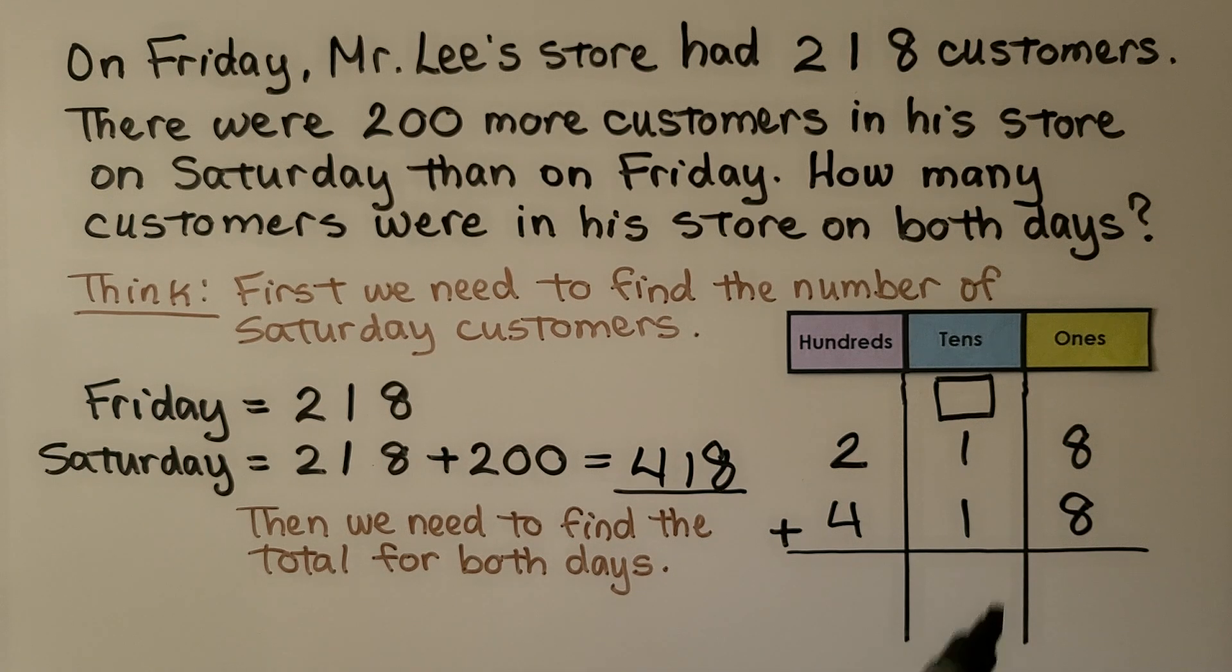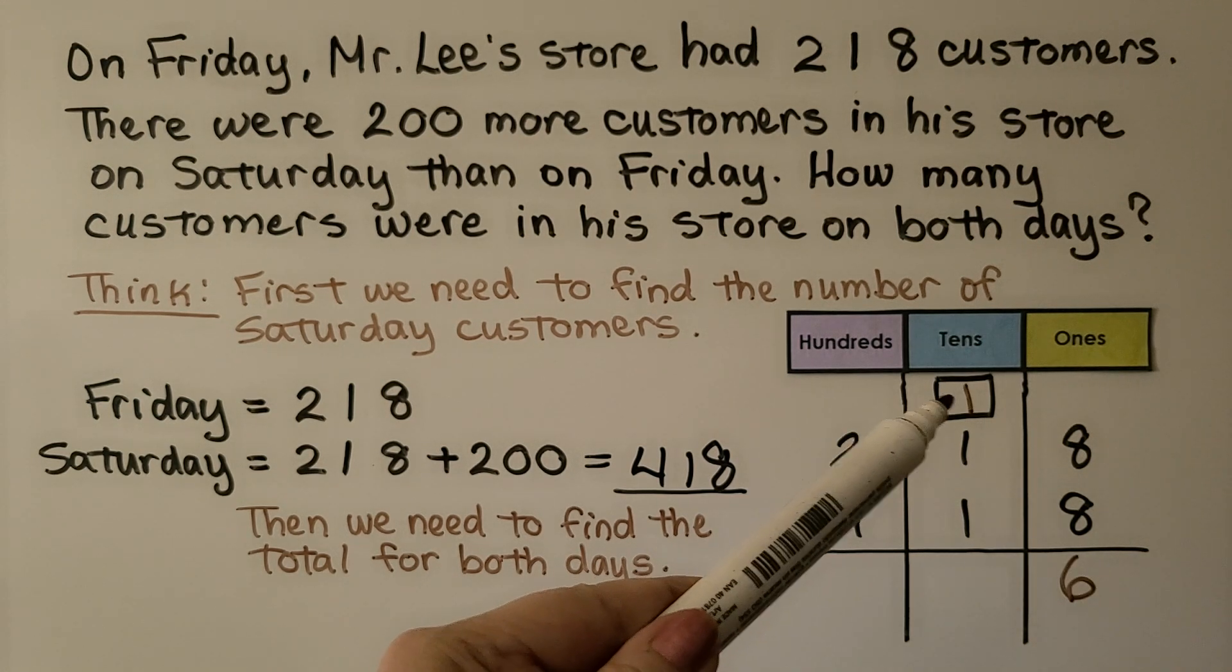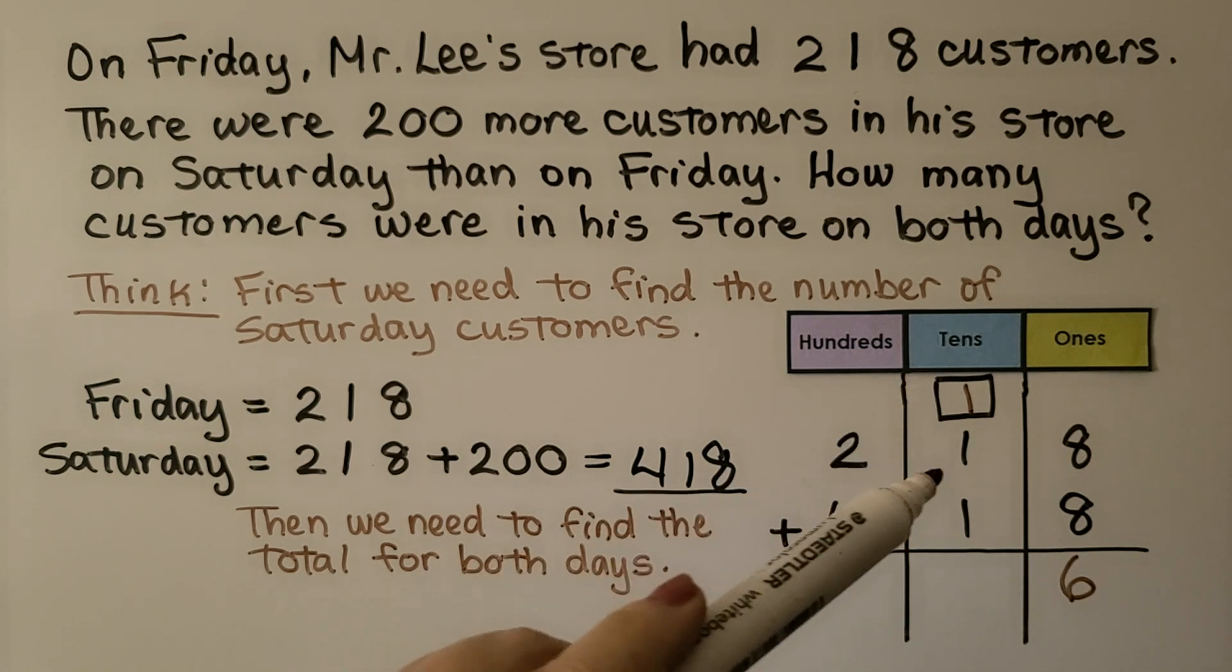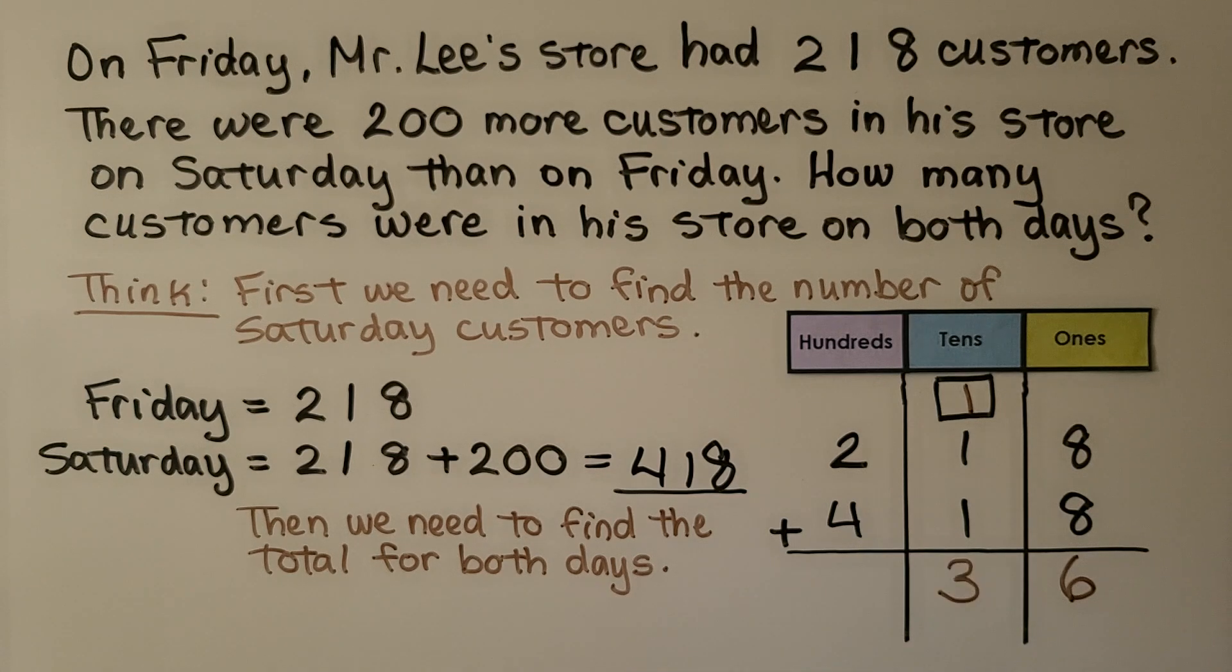We need to add 218 and 418. We start with the ones place. Eight plus eight is 16. We regroup and put a ten in the tens place and write a six in the ones place. Now we add the tens. We have one, two, three tens. Now we add the hundreds. We have four, five, six. That means he had 636 customers on Friday and Saturday.